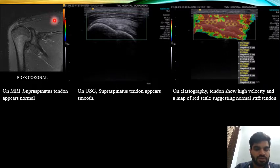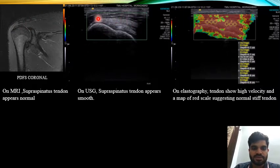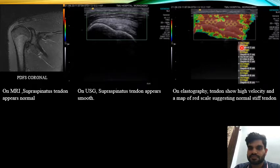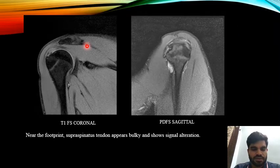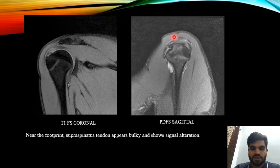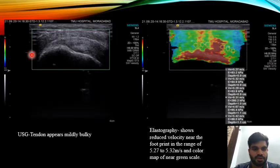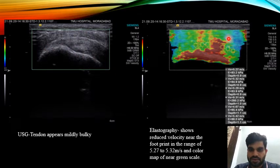This MRI image shows the normal supraspinatus tendon. On ultrasound, the supraspinatus tendon appears smooth. On elastography, the tendon shows high velocity and a map of red scales, suggesting a normal stiff tendon. In this case, near the footprint, the supraspinatus tendon appears bulky with signal alteration on T1 fat-saturated coronal and PD fat-saturated sagittal images. On ultrasound the tendon appears mildly bulky, and on elastography it shows reduced velocity near the footprint in the range of 5.27 to 5.32 m/s with a color map of near green scale.